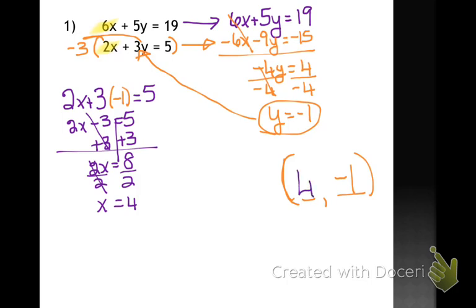So in this one, instead of multiplying by negative 1, I figured out that if I multiplied by negative 3, I could create an opposite. All right, let's try one more.